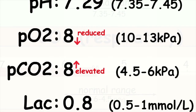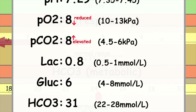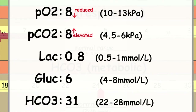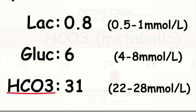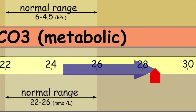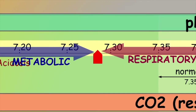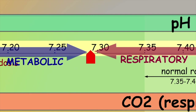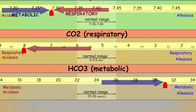The next thing to consider is whether there is any evidence of metabolic compensation — is the metabolic system trying to compensate for this respiratory acidosis? If we look at the bicarb levels, we can see that bicarb is 31; it is elevated. The kidneys are starting to up their production of bicarbonate and push more bicarbonate into the blood to try and combat this respiratory acidosis. However, the pH is still acidotic, so we know this isn't fully compensated. We're going to describe this as a partially compensated respiratory acidosis, because the pH hasn't returned back to a normal range.